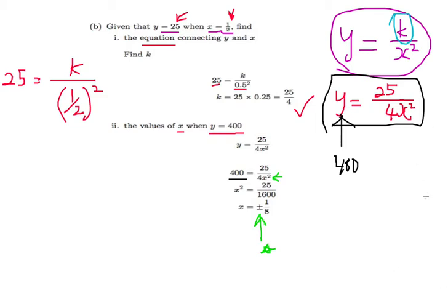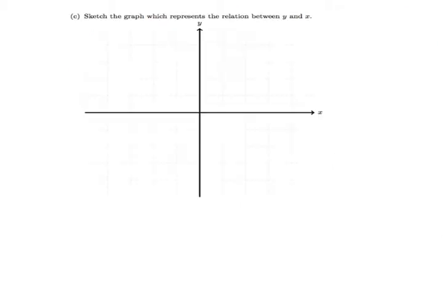With this formula in mind, y equals 25 over 4x squared, the next part (c) asks you to sketch the graph that represents the relationship between y and x. What you have here is like a y equals 1 over x squared curve. How do they look like?